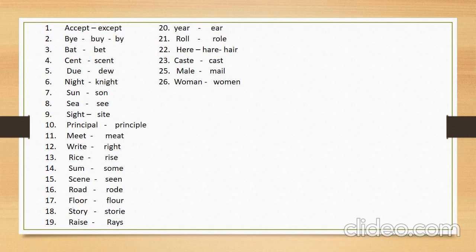Number fourteen: 'sum,' meaning addition or subtraction — jama karna ya minus karna. Its similar in sound word is 'some,' meaning kuch — some. Number fifteen: 'scene,' meaning manzar. Its similar in sound word is 'seen,' the third form of 'see' — dekhna. Number sixteen: 'road,' meaning sadak. Its similar in sound word is 'rode,' the second form of 'ride' — sawar hua.